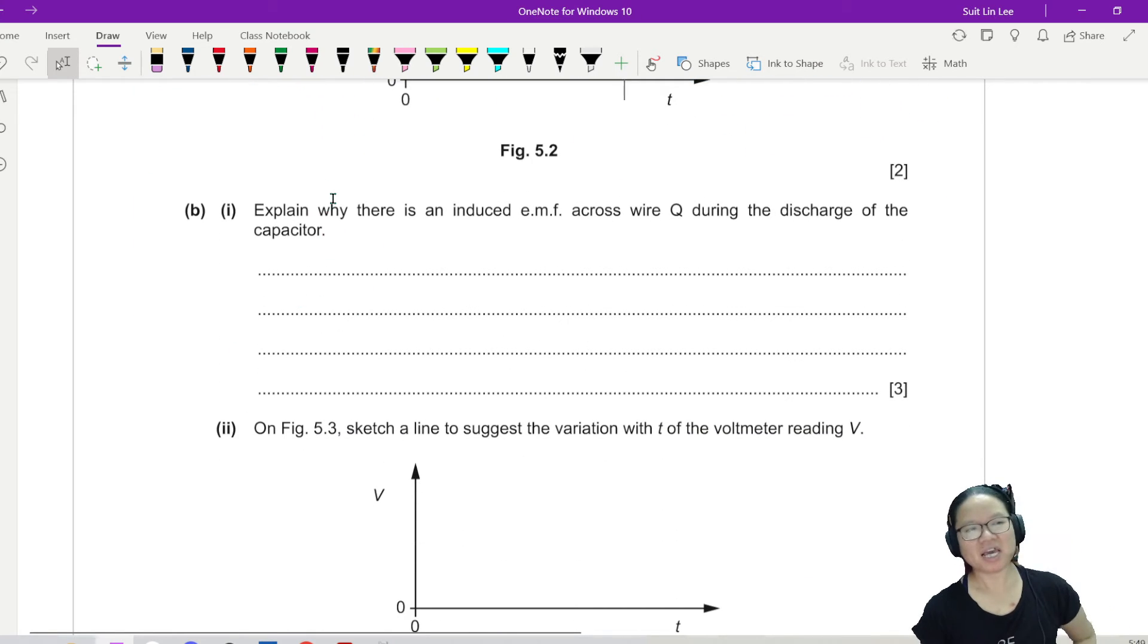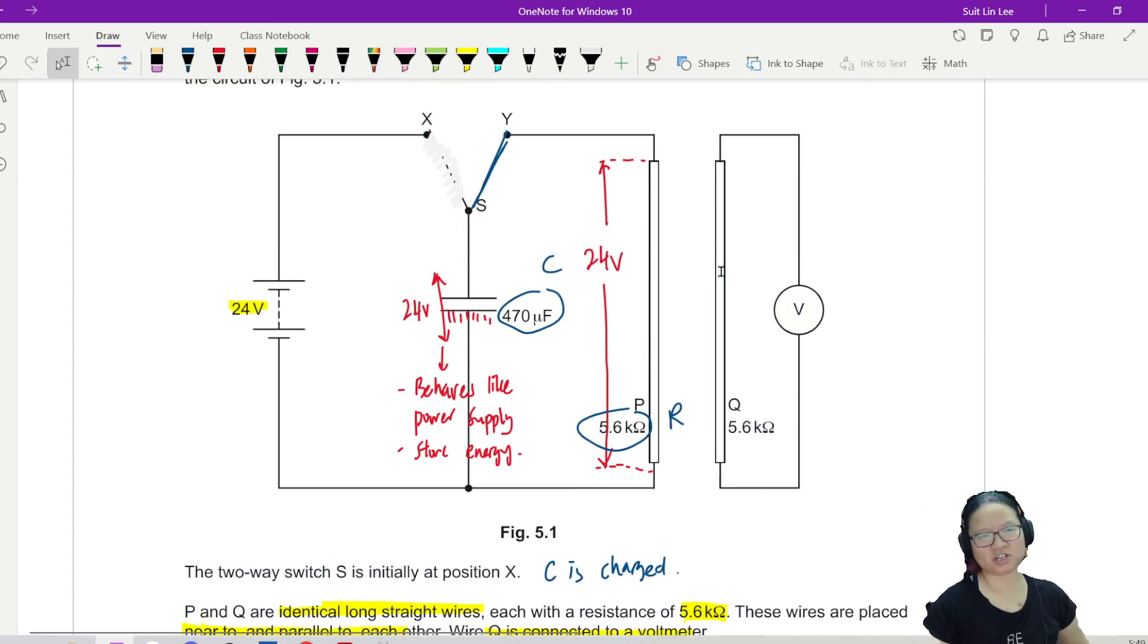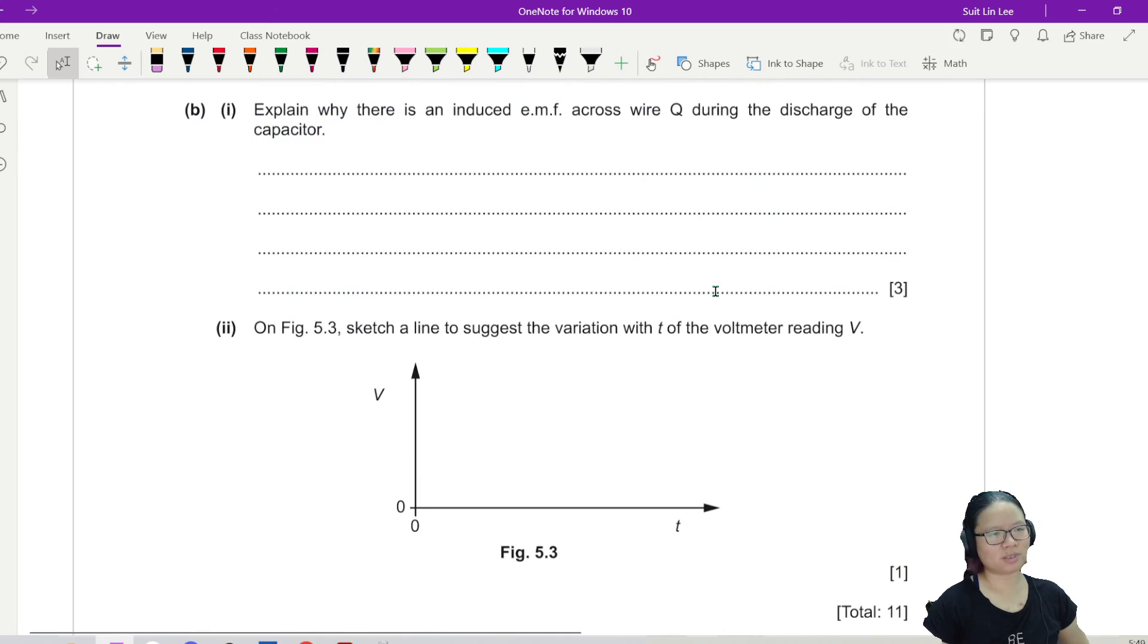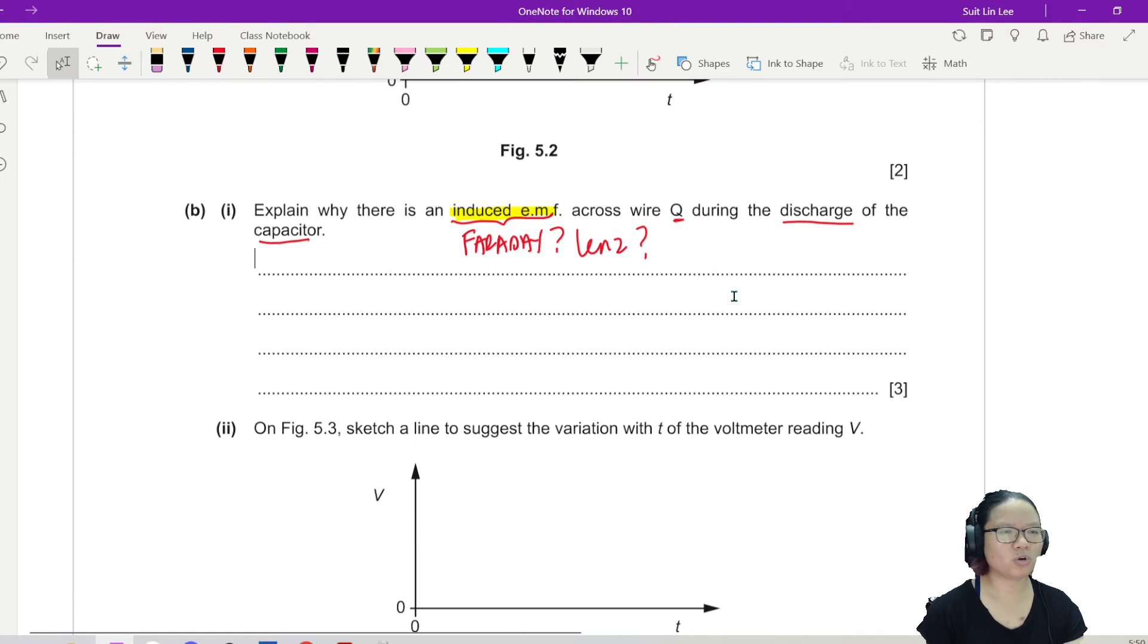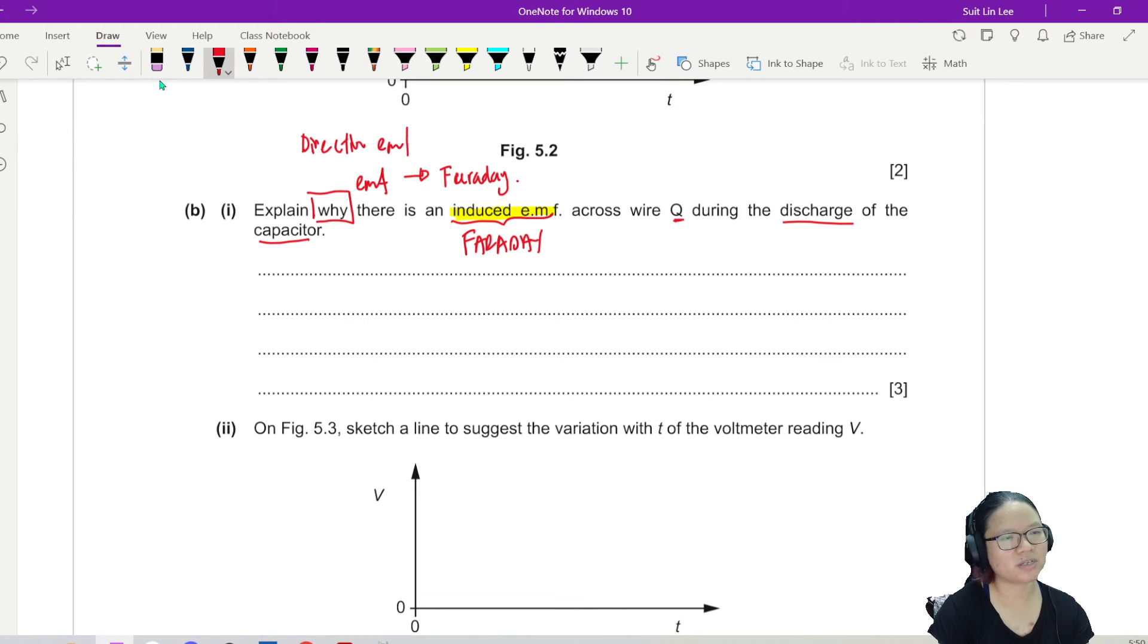Here's the jump scare. Explain - because remember we haven't, we need to talk about wire Q. Wire Q is chilling beside wire P. What do they want? Explain why there is an induced EMF. If I see the word induced EMF, my brain went to Faraday and Lenz. So what is the induced EMF across wire Q during the discharge of the capacitor? To explain the presence of the induced EMF, we will need to talk about Faraday. Why there is EMF? Faraday. What direction is this induced EMF? Lenz.